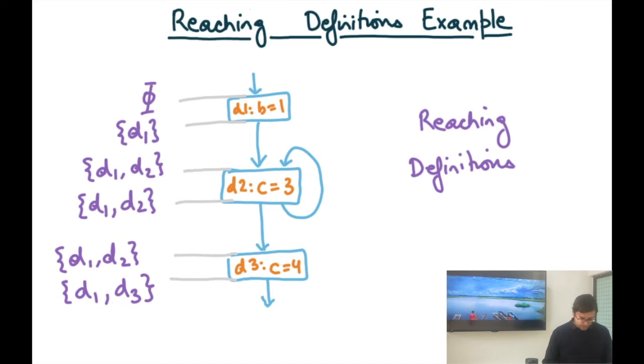So two important things: one is that D1, D2 are present even before D2 because of the loop, and D2 is not present at the exit of the program because D3 has killed D2. Just to kind of review what reaching definitions means.